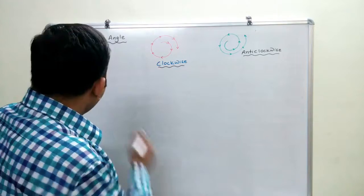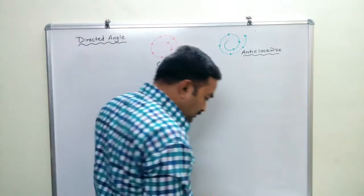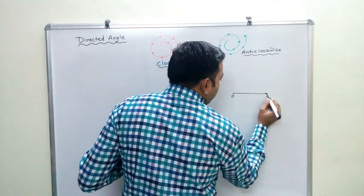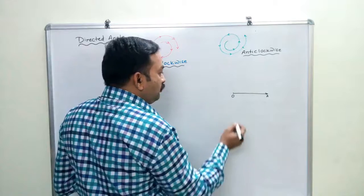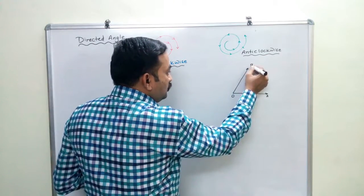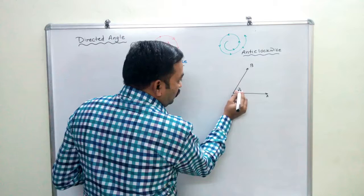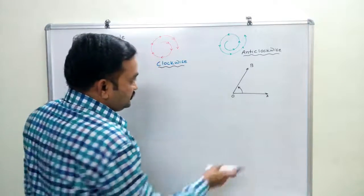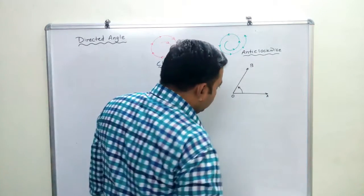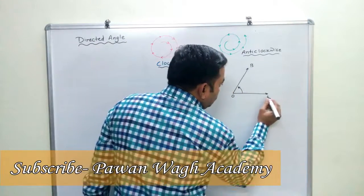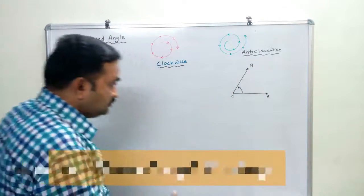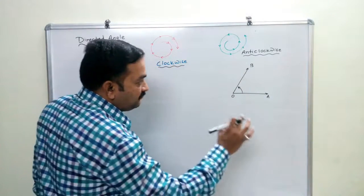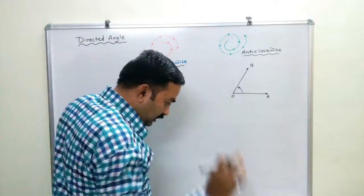Now let us start with our directed angle. Suppose ray O-A starts rotating in anti-clockwise direction and takes its position O-B. It starts moving from here and moves till here. So the rotation from O-A to O-B is defined as directed angle A-O-B.